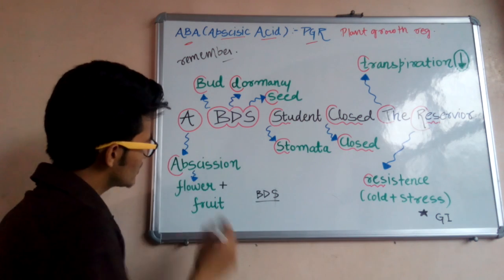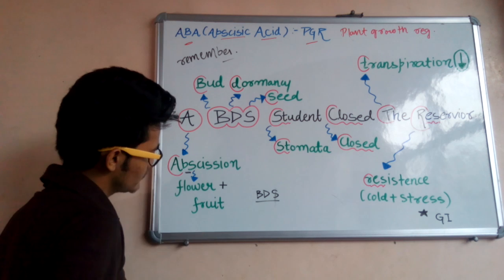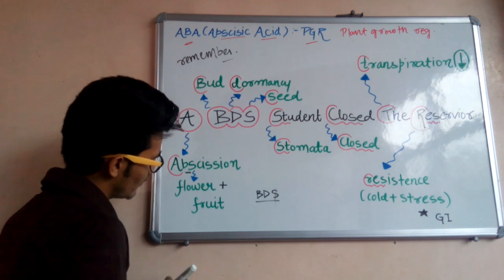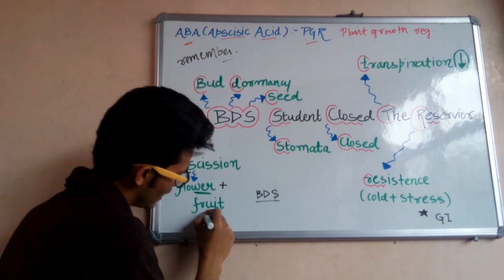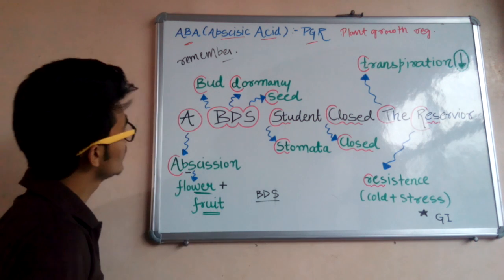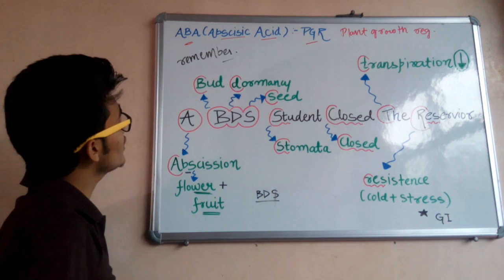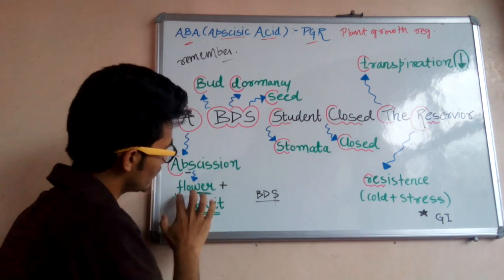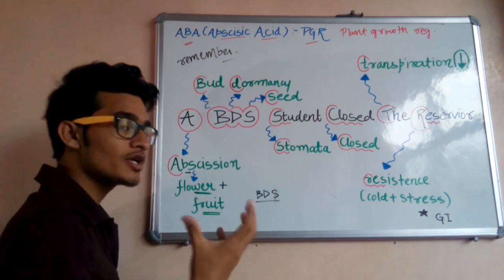A simply means abscission. So it increases the abscission of flower as well as fruit. So the abscisic acid, as the name indicates, is increasing the abscission of flower and fruit of a particular plant.